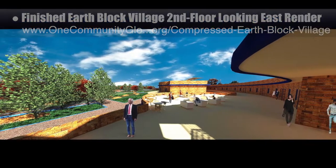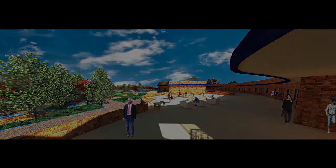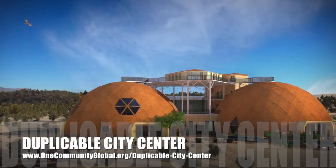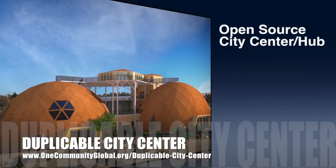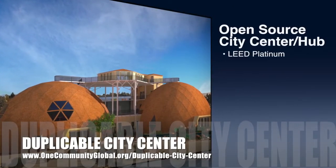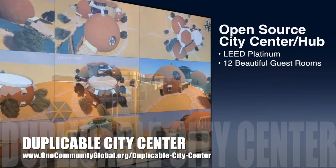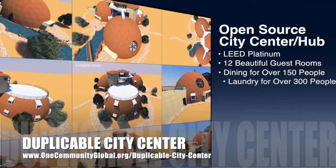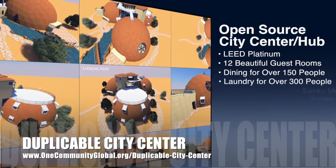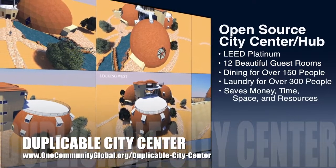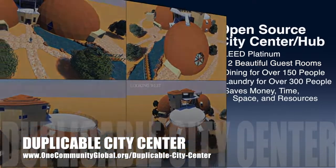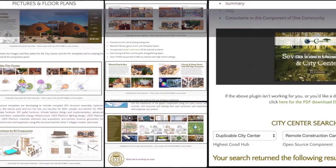One Community is also creating an open source duplicable city center designed to be LEED platinum certified, provide 12 guest rooms, dining for over 150 people, and laundry and recreation space for over 300 people — all while saving money, time, space, and resources. This week the core team added the Seven Villages book into the duplicable city center open source hub and updated all related imagery and downloadable PDFs.